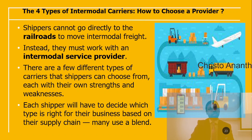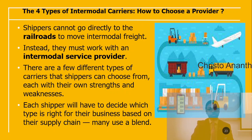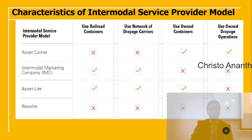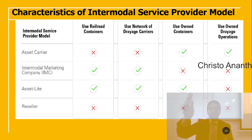There are four types of intermodal carriers and shippers must choose a provider carefully. Shippers cannot go directly to railroads for intermodal freight — they must use an intermodal service provider. Each type has its own pros and cons. The ISP model includes: asset carrier (uses own containers and trade operations), intermodal marketing company or IMC (uses railroad containers and network of trade carriers), asset-light (accesses railroad containers and network of trade carriers but also uses own containers), and reseller (no direct access to railroads).